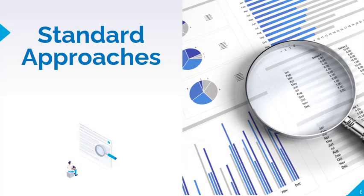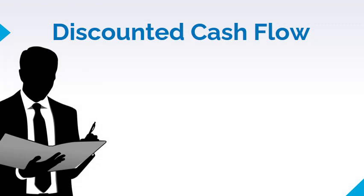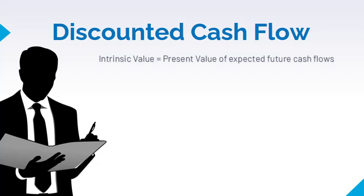There are two standard approaches to valuation: the discounted cash flow approach and the relative value approach. The discounted cash flow approach measures the intrinsic value as the present value of an asset's expected future cash flows. The main advantage of this approach is that it is based on an assessment of the asset's fundamentals, and thus it is less exposed to market moods and perceptions. It forces one to take a hard look at the characteristics of the firm and its business and to reconsider the assumptions used in valuing the asset.